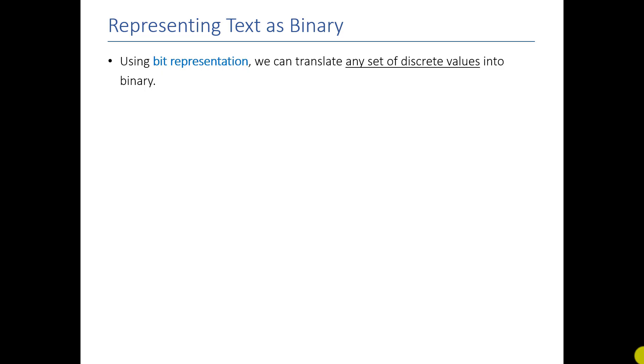This idea of bit representation isn't just for ducks. We can do it with any set of discrete values. So say, for example, we wanted to represent all of the letters in the alphabet with our binary representation skills. Let's say I wanted to represent all 26 letters and 10 numbers, so 36 characters. How many bits would we need?